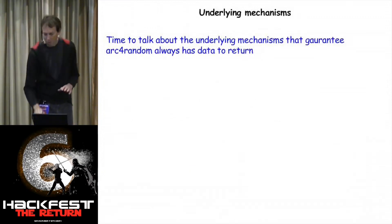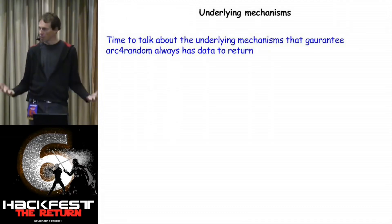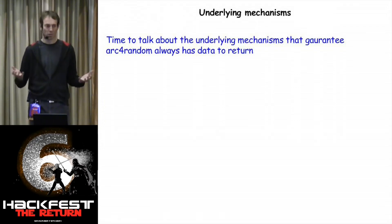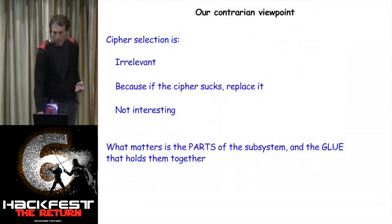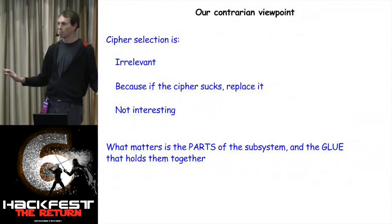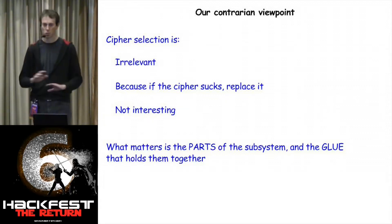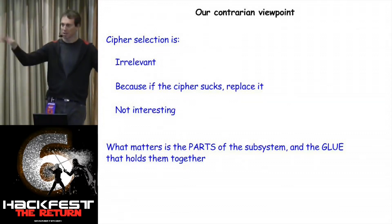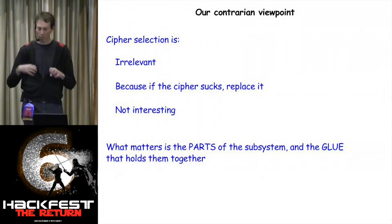Now I'll talk about the mechanisms underneath, built as scaffolding to ensure we can actually deliver this. Our contrarian viewpoint: we don't care what cipher is used for the actual data stream inside arc4random, because the minute we discover the one we're using is wrong, we'll just replace it. Forget about the cipher — it's not what's relevant. What matters is the pieces down below and how they fit together to move the data up.